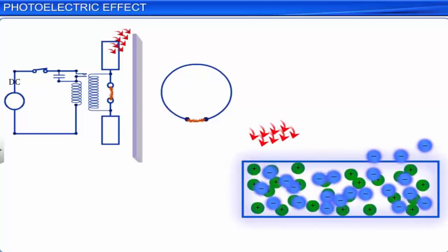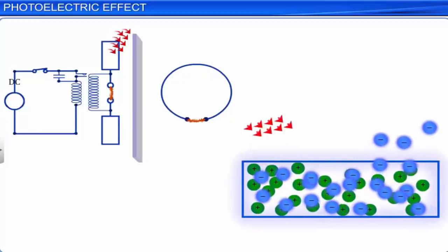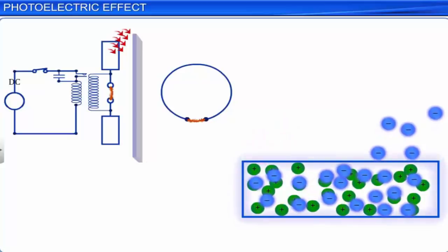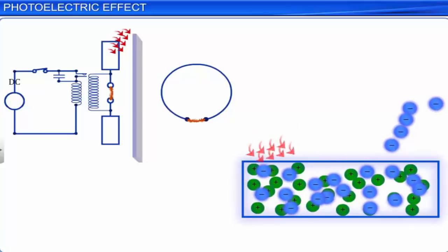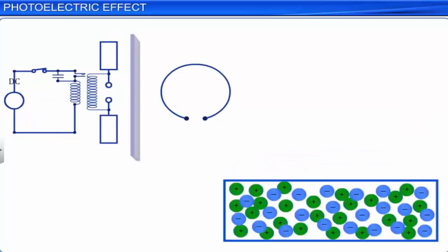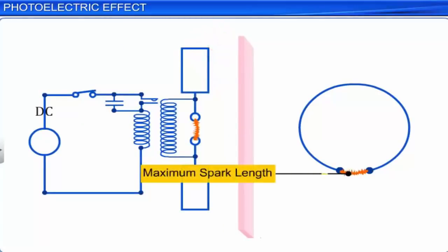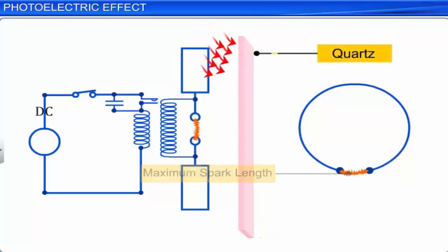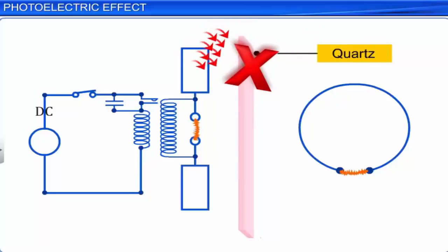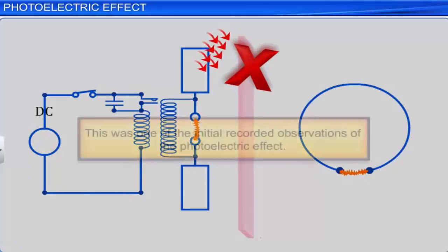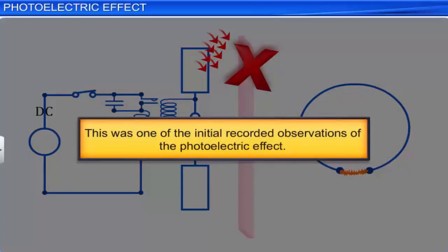An electron is able to escape from the metal surface only when its kinetic energy is sufficient to overcome the electrostatic attractive force. When the light was removed, the length of the spark decreased as there were no electrons being emitted by the surface. Moreover, he observed that there was no decrease in the length of the spark when he substituted glass with quartz, as quartz does not absorb UV radiation. This was one of the initial recorded observations of the photoelectric effect.